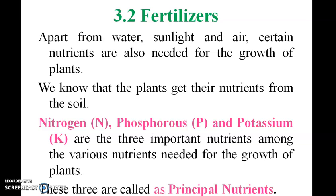Plants also need nutrients for their growth. We know plants get nutrients from the soil. Nitrogen, phosphorus, and potassium — NPK — are the important nutrients among various nutrients. These are the three principal nutrients which contain nitrogen, phosphorus, and potassium.